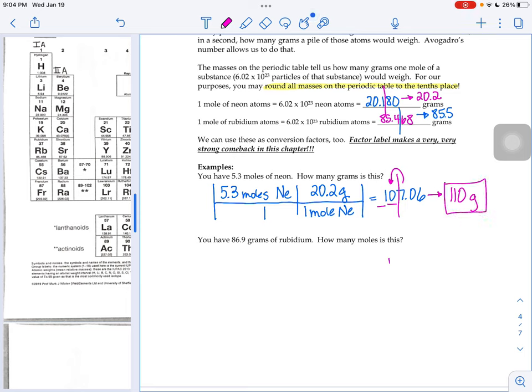That would round to 110 grams. So I'm just going to give you the answer to the second one, 1.02 moles of rubidium. So if you want to try that one, that's what you should get as your answer.